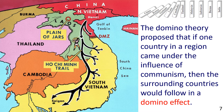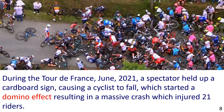Note: This was one of the factors which led the United States into military action in Vietnam during the 1960s. Another example of domino effect — in the picture, we see a major pile-up in the Tour de France cycle race. Sentence Example: During the Tour de France, June 2021, a spectator held up a cardboard sign causing a cyclist to fall, which started a domino effect, resulting in a massive crash which injured 21 riders.